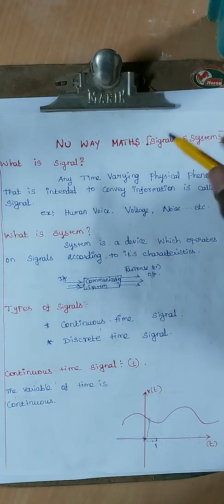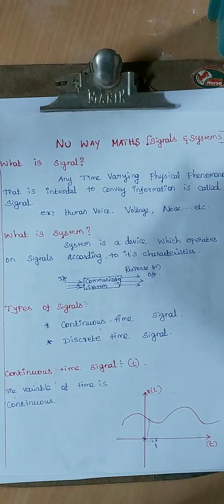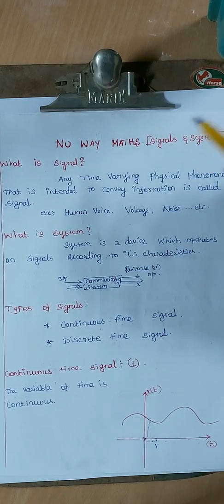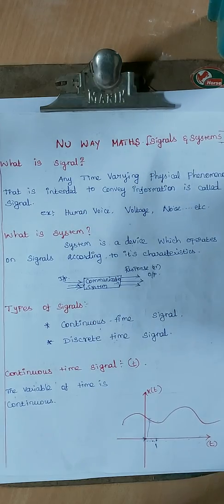Welcome to OMAX. Now let's talk about the topic: Signals and Systems. This is for the Electrical GATE, plus TRB Electrical Engineering TRB.